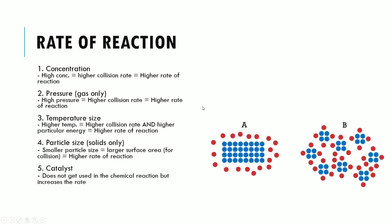Concentration is basically how many particles there are in a given volume. A higher concentration suggests there are more particles closer to each other, so by chance alone the rate of collision will be higher, meaning the rate of a chemical reaction will be increased. Pressure works exactly the same way, except it's only related to gases. A high pressure means there are more particles in a given space, so the collision rate will be higher, therefore increasing the rate of chemical reaction.